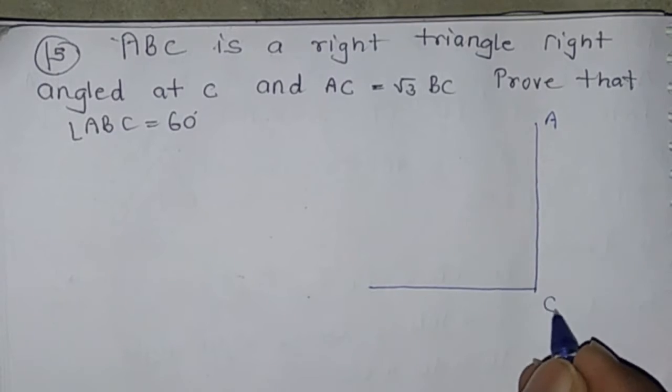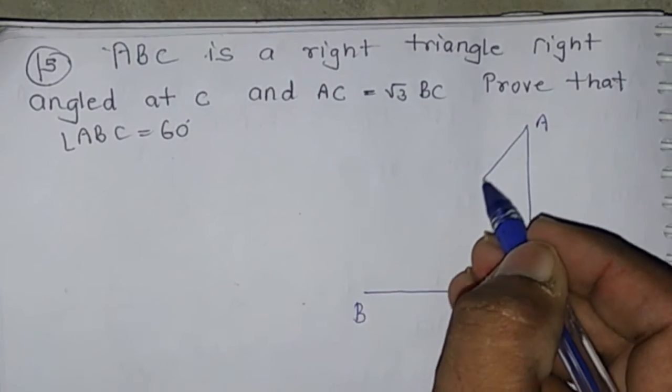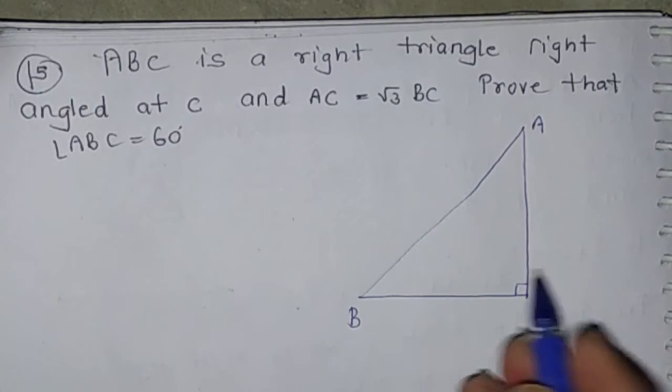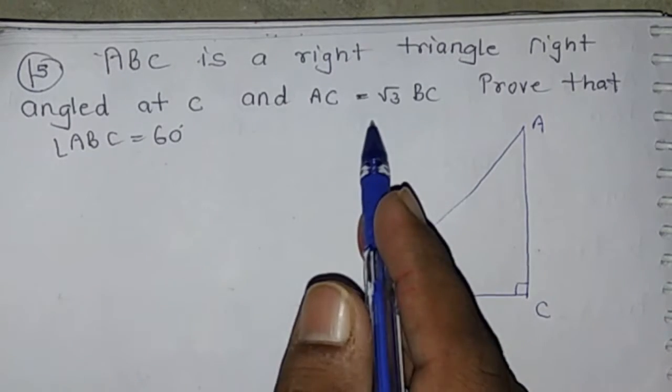Given: Triangle ABC is a right angle triangle, right angled at C, and AC equals root 3 BC.